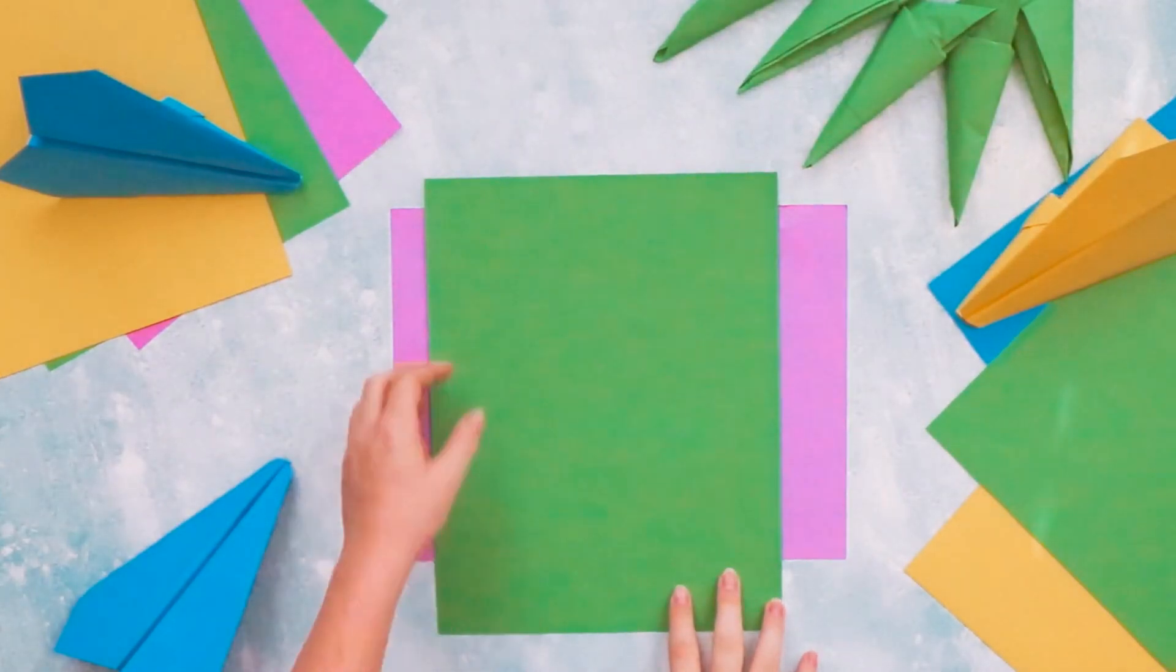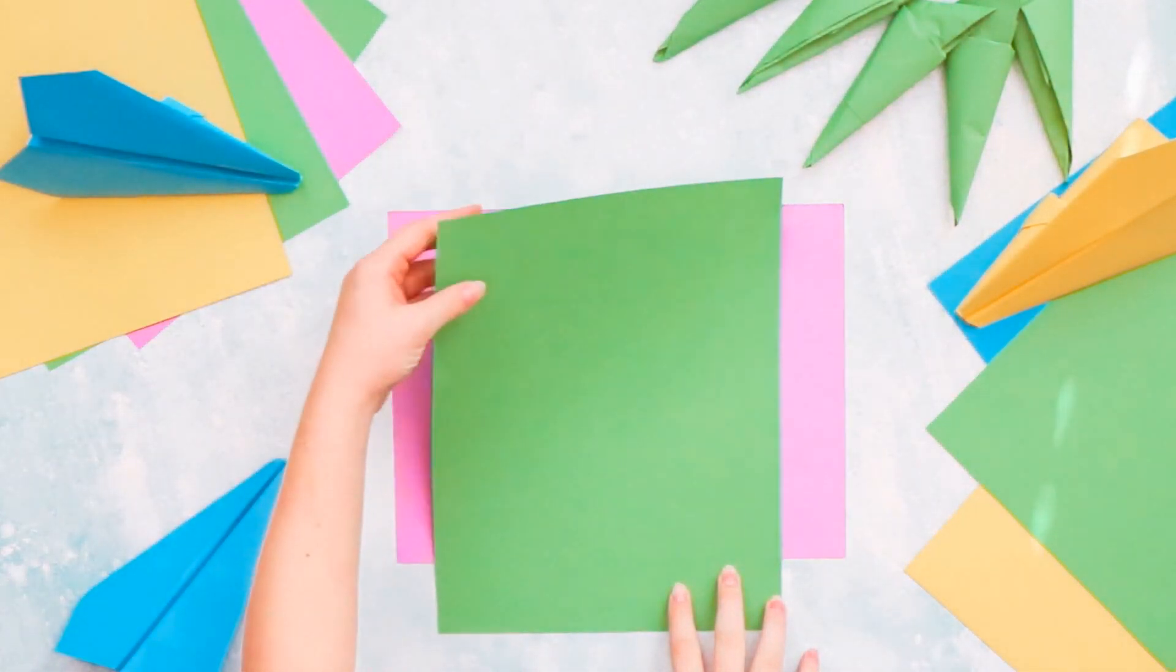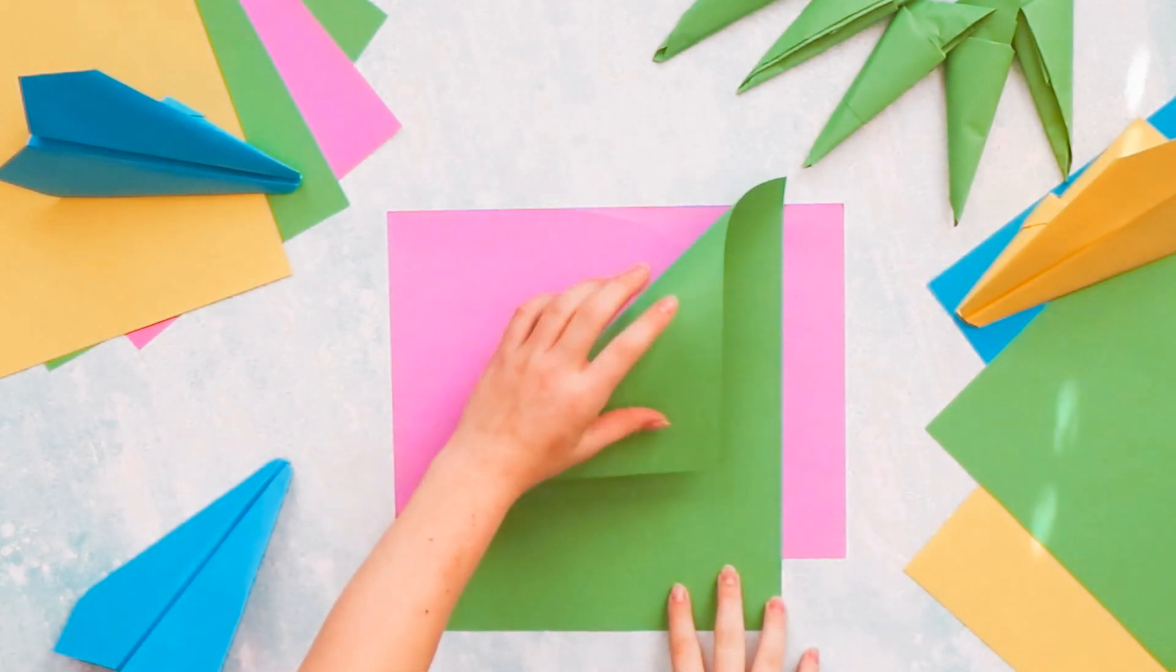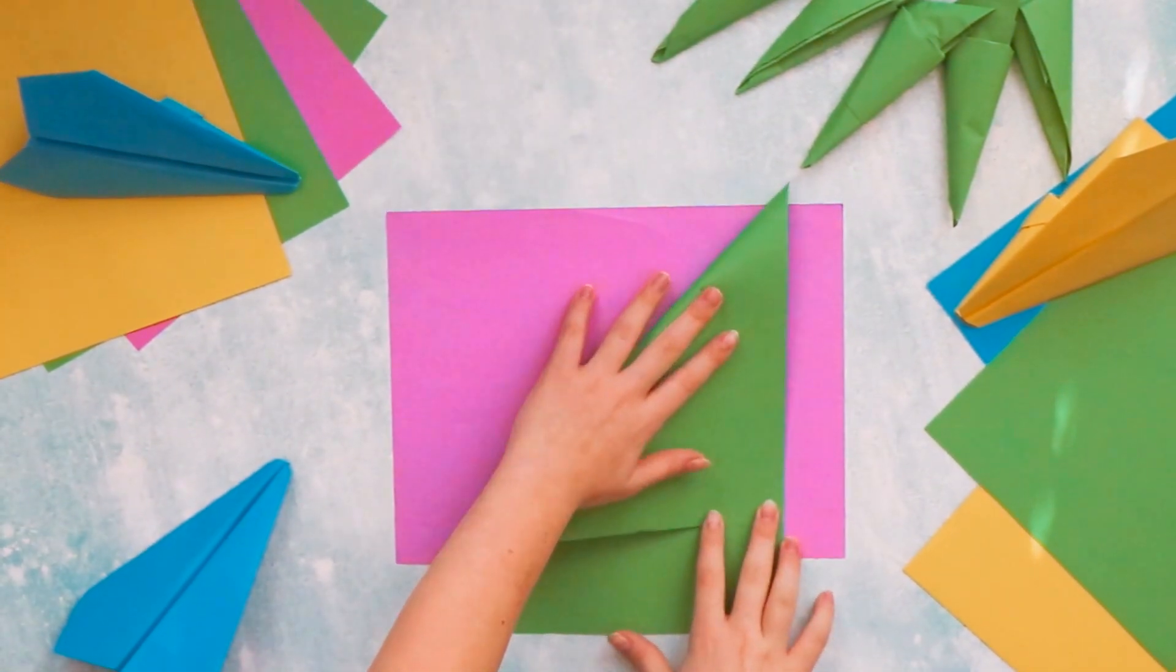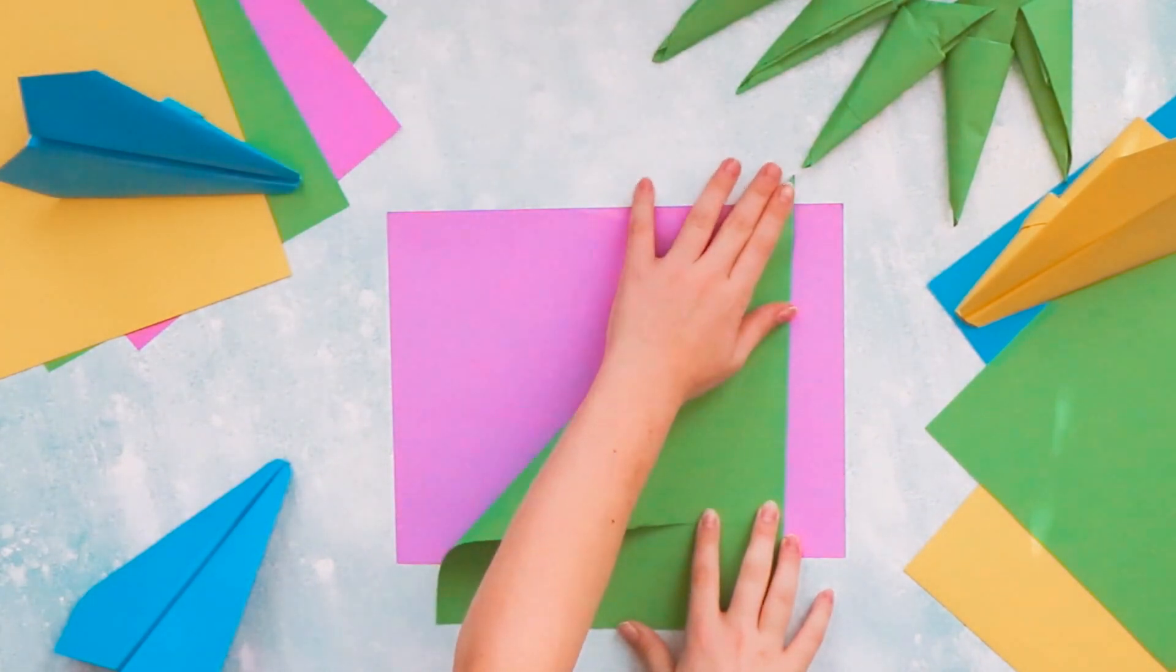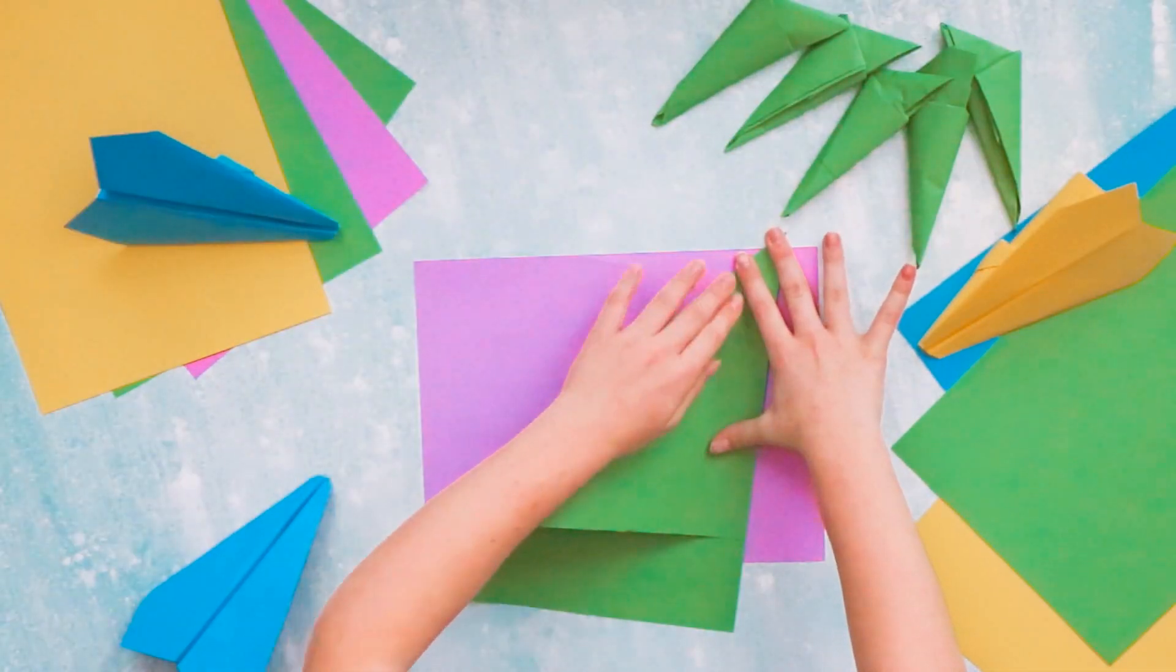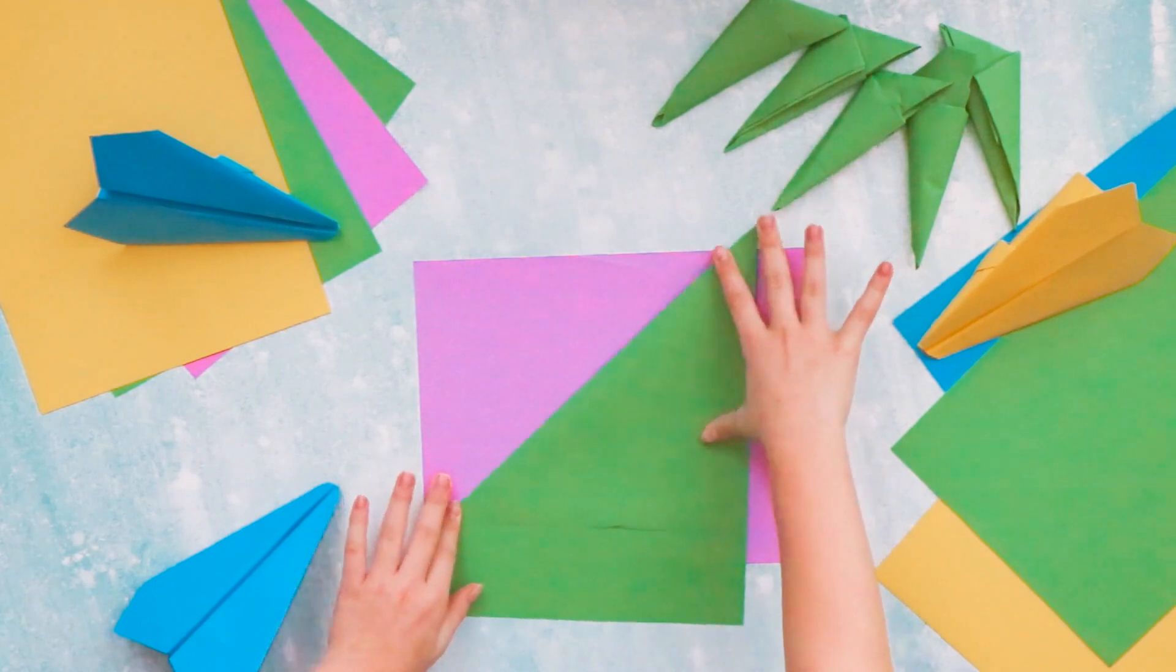So the first thing you want to do is take a corner of your paper and fold it into a triangle like this, and right here to be pointed just like this.